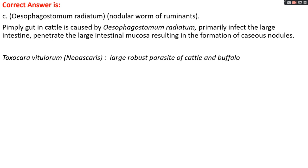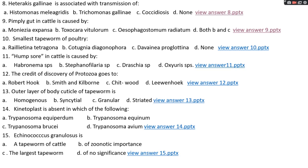Toxocara vitulorum causes neoascaridosis. It is a large robust parasite of cattle and buffalo.